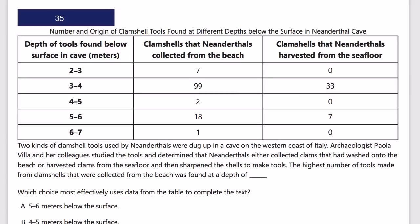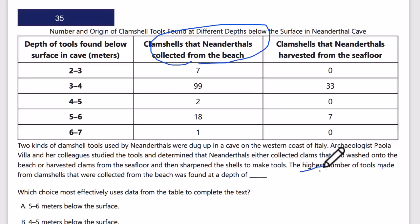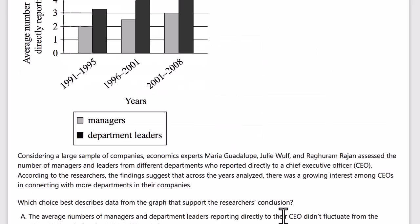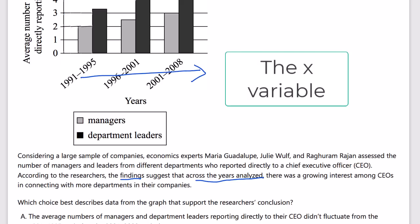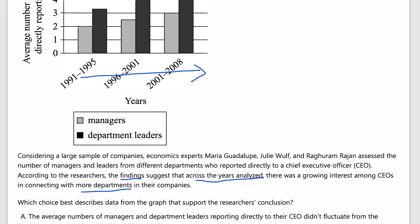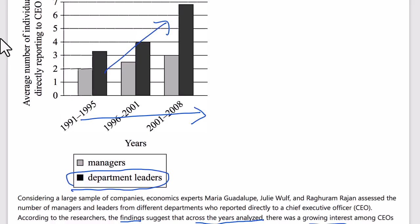Let's start with a very simple example. The condition says: the highest number of tools made from clamshells that were collected from the beach — so we want the clamshells-collected-from-beach column — was found at a depth of. We want the highest number, which is 99, so the depth that occurs is this row. We want a specific row and a specific column; the other columns and rows are irrelevant. In the next condition, across all years there is a growing interest among CEOs in connecting with more departments — so we want that legend item, and it must be growing across the x-axis, meaning going upward.